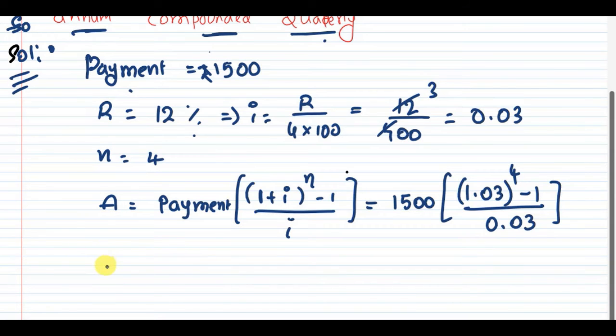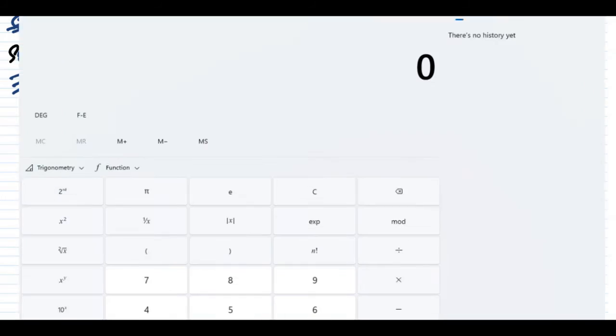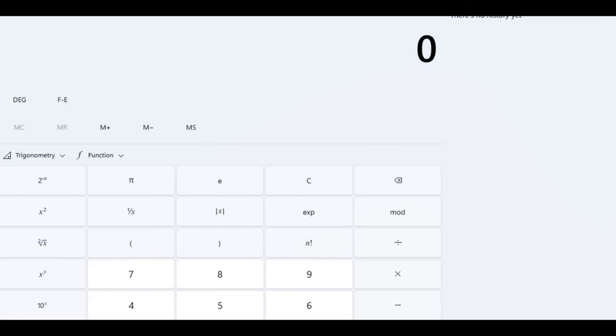Now, use logarithms to calculate this value. So 1.03 to the power 4, that means double square, that was 1.1255, and after that minus 1, then it will be 0.1255. And it was divided by 0.03, then it will be 4.183627, and it is multiplied with 1500.